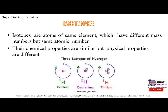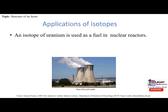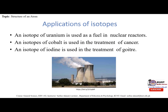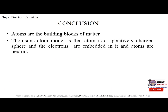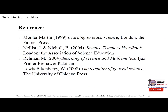Some applications of isotopes: an isotope of uranium is used as fuel in nuclear reactors; an isotope of cobalt is used in the treatment of cancer; and an isotope of iodine is used in the treatment of goiter. In conclusion, atoms are the building blocks of matter. The Thomson atom model states that an atom is a positively charged sphere with electrons embedded in it and atoms are neutral. Rutherford's famous gold foil experiment showed there is a positively charged center called the nucleus, and electrons revolve around the nucleus in circular paths. This was all about this lecture.